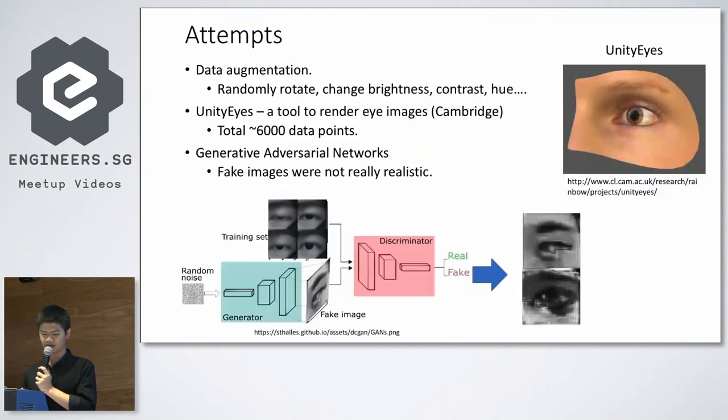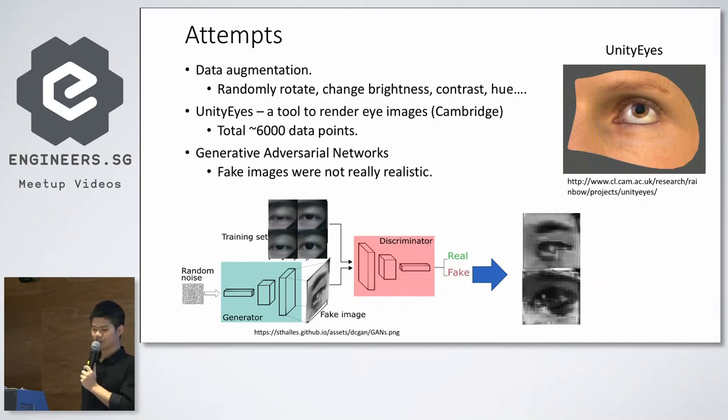I try to increase the data using different techniques. First, I do data augmentation - randomly rotate, translate some images, change the brightness, change the contrast, etc. I also generate new images using an animated tool called Unity Eyes from Cambridge University. It has the ability to generate animated versions of the eye that can look around. I increased the total number of data points to 6,000. I also use generative adversarial networks to generate fake images for training, but I didn't include it in the dataset because, as you can see over here, the generated fake image on the right doesn't look realistic enough to put in the training set.